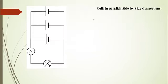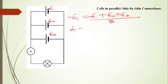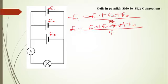But what if the cells are connected in parallel — that is, in a side-by-side connection? The total EMF becomes E1 plus E2 plus E3, and you divide by the total number of cells. If there are 3 cells, you divide by 3; if there are 4 cells, you divide all four EMF values by 4 to find the total equivalent electromotive force across them.